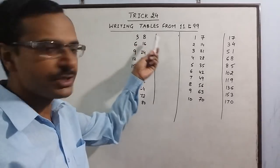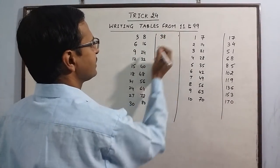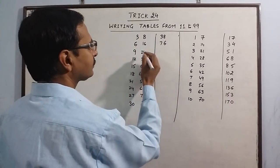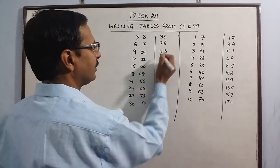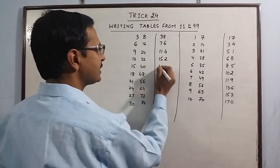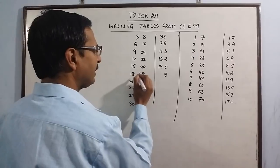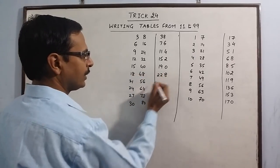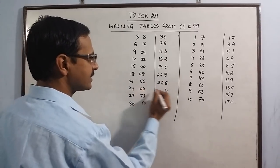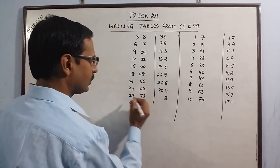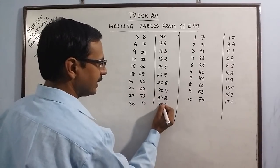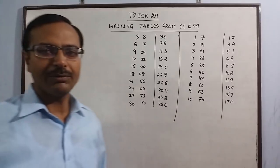Now follow the same method. If you have 2 digits, write the number as it is. Then: unit digit 6, 6 plus 1 is 7; unit digit 4, 9 plus 2 is 11; unit digit 2, 12 plus 3 is 15; unit digit 0, 15 plus 4 is 19; unit digit 8, 18 plus 4 is 22; unit digit 6, 21 plus 5 is 26; unit digit 4, 24 plus 6 is 30; unit digit 2, 27 plus 7 is 34; unit digit 0, 30 plus 8 is 38. That's it — we get the table of 38.